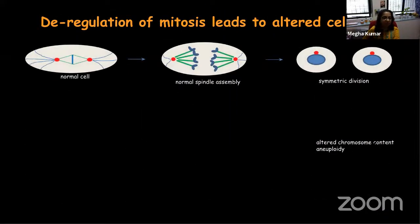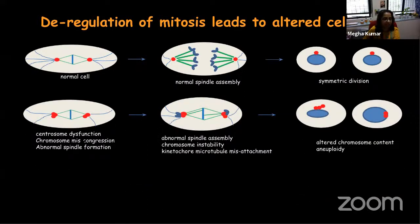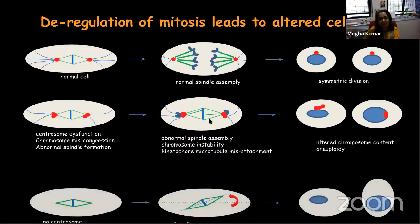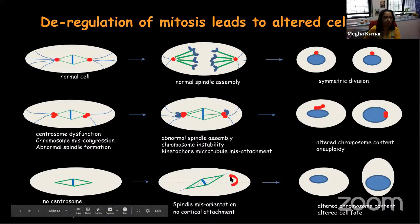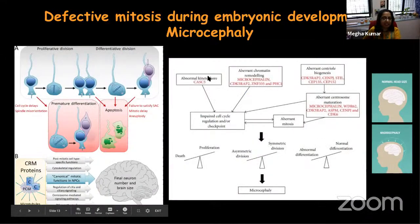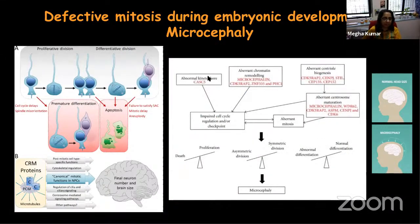What happens if mitosis goes wrong? If it's a normal cell, it will undergo normal spindle formation and give rise to a symmetric division in the classical sense. If there are defects — like too many centrosomes, chromosomes sitting at the poles that have not progressed properly, spindle defects, or chromosomes that have not attached to spindle fibers — it results in altered chromosome content between the two cells. This could give rise to aneuploidy. If there are no centrosomes, the spindle can also not orient properly, giving rise to different cell fates. One example of mitosis going wrong is microcephaly.